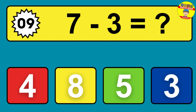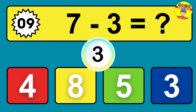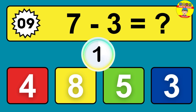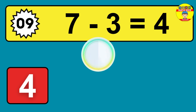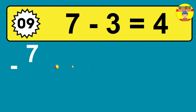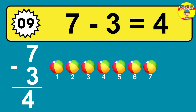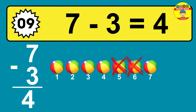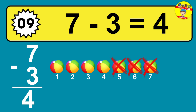Question 9: 9 minus 2 equals what? 1, 2, 3, 4, 5, 6, 7, 8. So the answer is 7 minus 3 is 4. Let's count it: 1, 2, 3, 4.